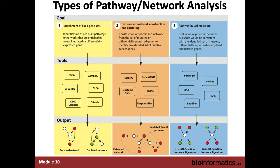The second type of method is de novo sub-network construction and clustering, where we have a particular set of genes we're interested in and ask which kinds of networks are connecting these genes together. The third category is pathway-based modeling, where we have an existing pathway diagram as a scaffold and ask if our genes of interest behave according to the rules set by that particular pathway diagram. This third method is perhaps the most specific — it requires very detailed data, but can potentially help you model your genes of interest using an existing pathway with high detail.